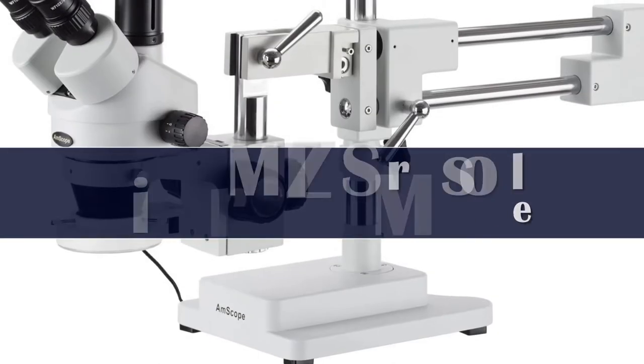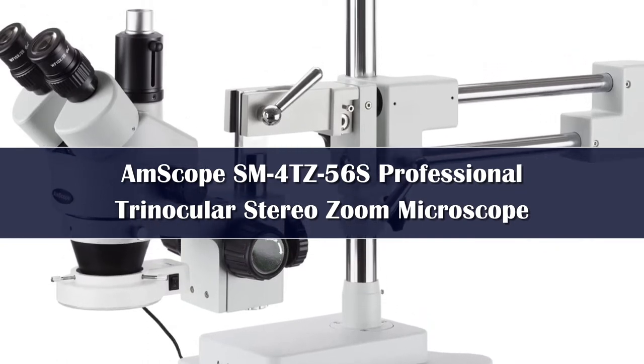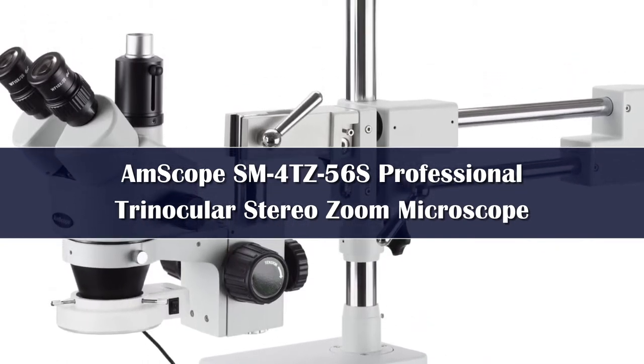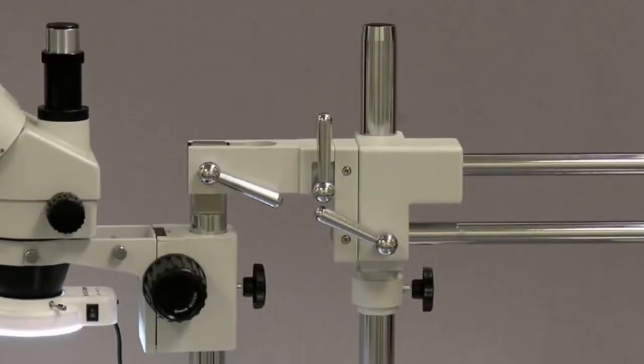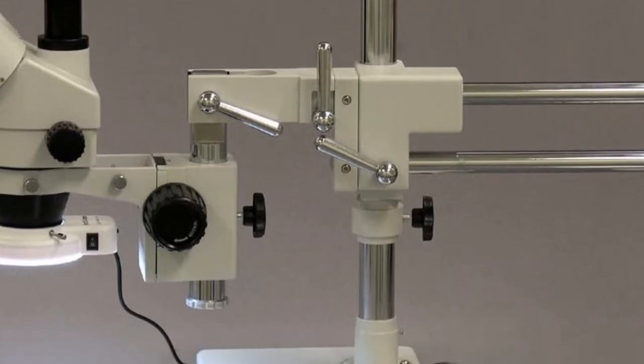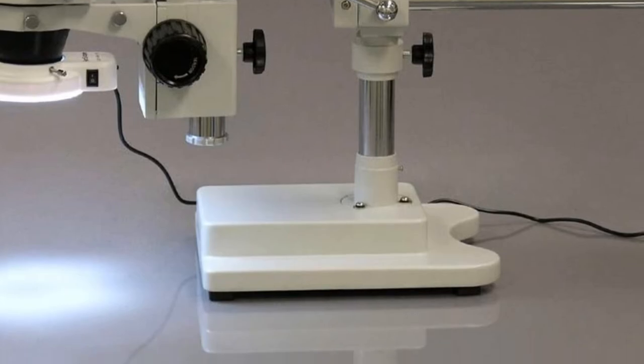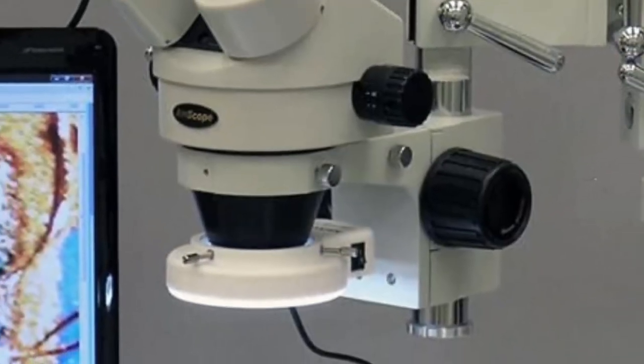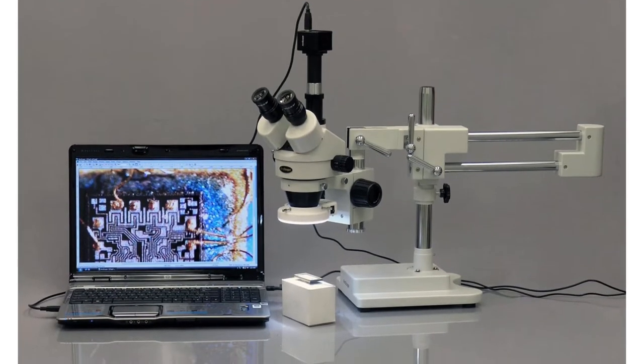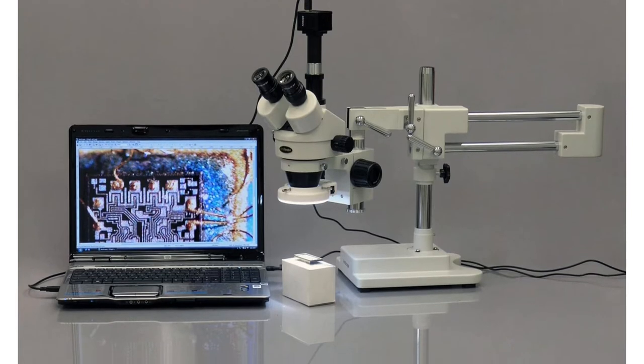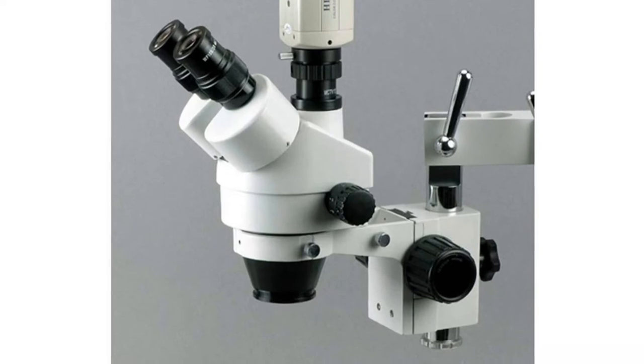Number 4. As we mentioned, trinocular models are the best stereo microscopes with camera options. If you want to record your experiment or workflow, something like this version from Amscope is an excellent choice. This professional grade microscope is perfect for all kinds of activities. Sometimes you want to be able to zoom into your target from a wider field of view. Some microscopes make it tricky to do this, while the SM4TZ56S does it all in one fluid motion.